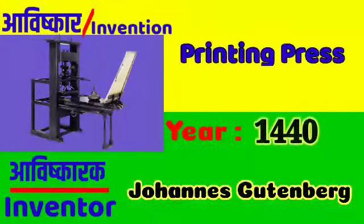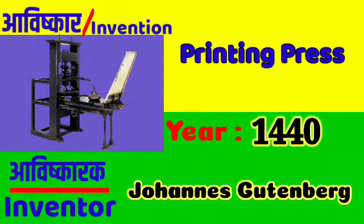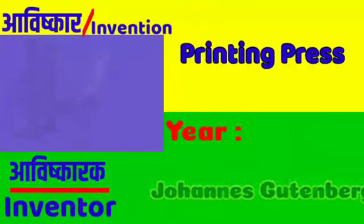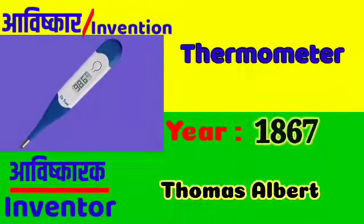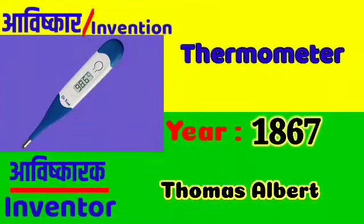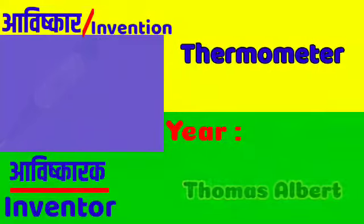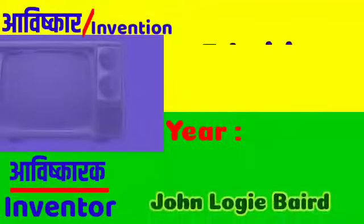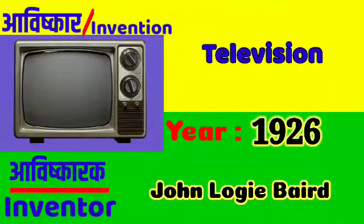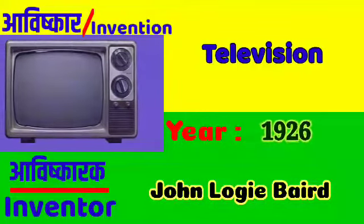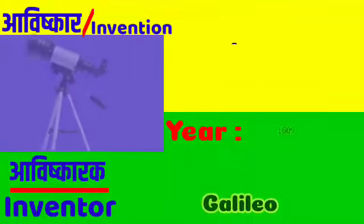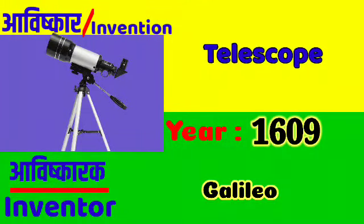Printing Press: Johannes Gutenberg in 1440. Thermometer: Thomas Allbutt in 1867. Television: John Logie Baird in 1926. Telescope: Galileo in 1609.